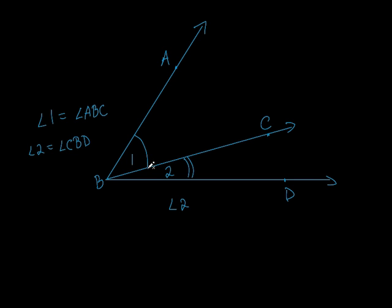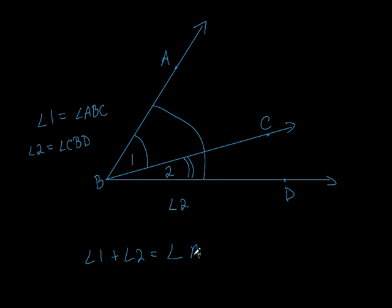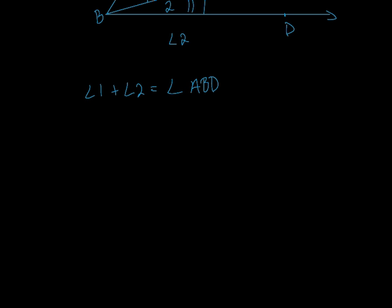What about that combination of angle one and two — this whole big giant angle right there? I could call that angle ABD. So I could say that angle one plus angle two equals angle ABD. This is really important — we're going to be using this all year. Just because it's angle one and angle two doesn't mean it equals angle three, unless I actually labeled it angle three.